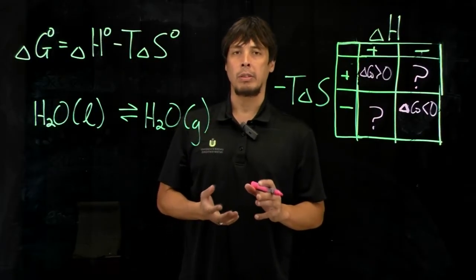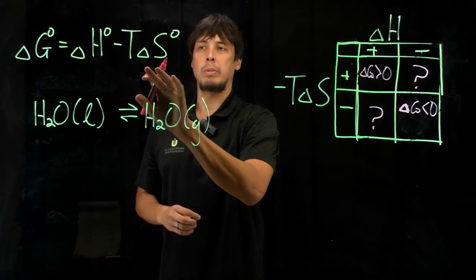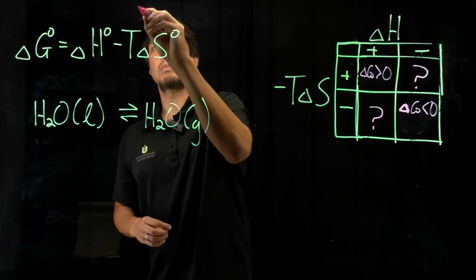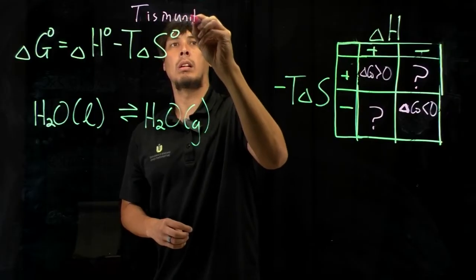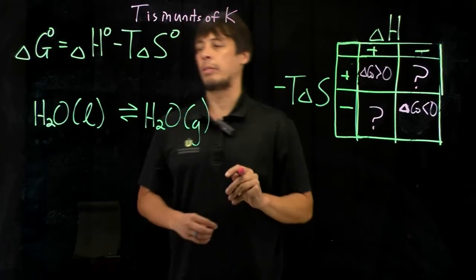And another important factor that goes into this is the temperature, because entropy is multiplied by temperature. And so as a note, temperature is in the units of Kelvin, not degrees C or Fahrenheit.